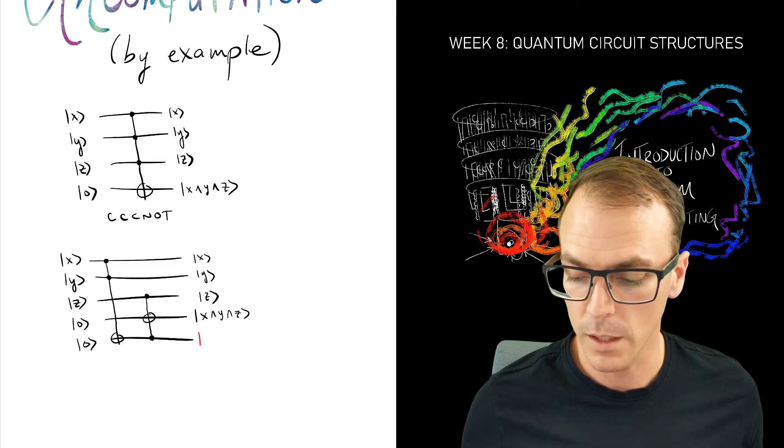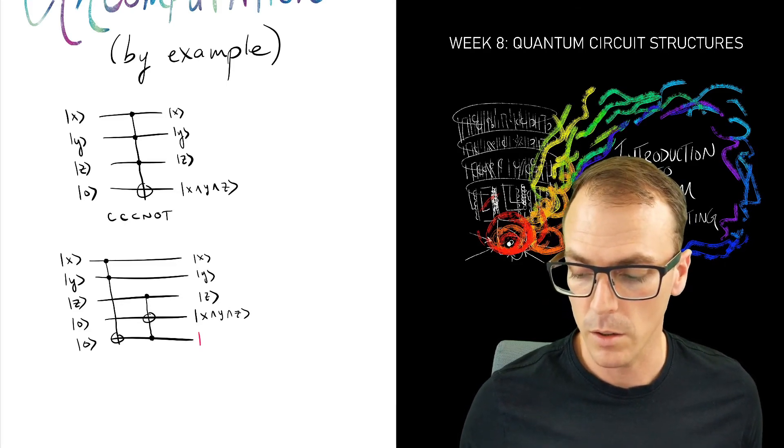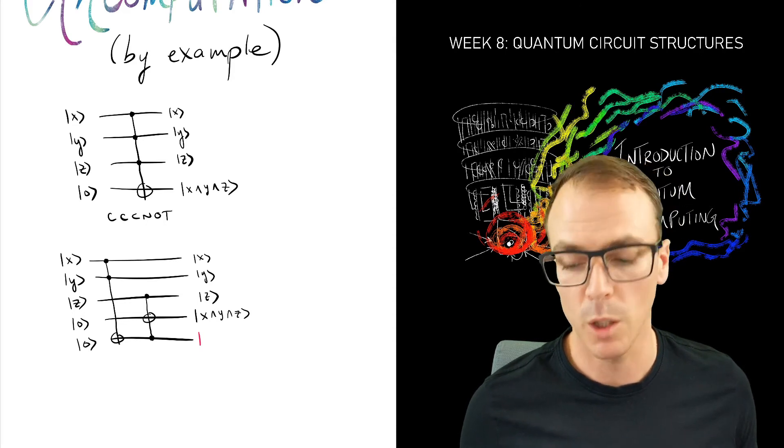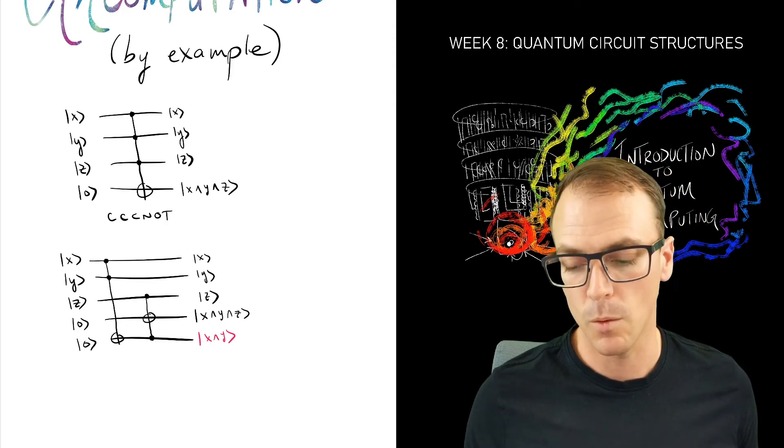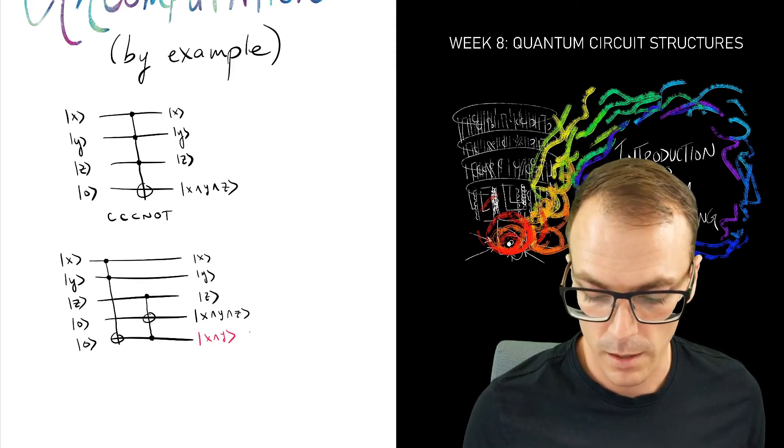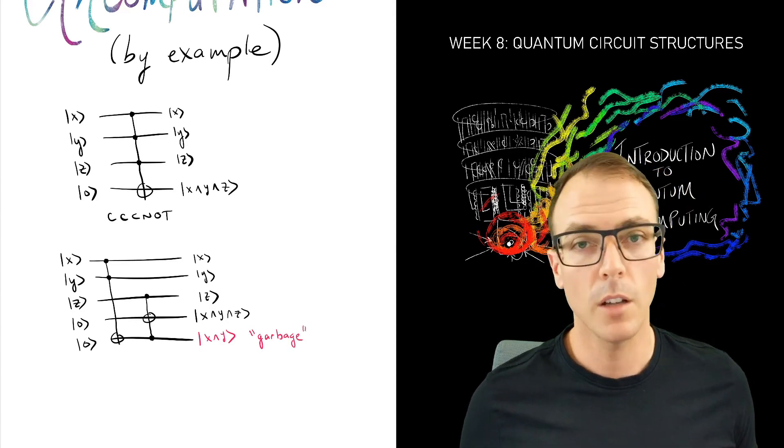However, we see something interesting. That bottom qubit is not left in the zero state. We've performed a CCNOT or Toffoli on the first, the second, and the bottom qubit. So that qubit is left in the state X AND Y. And this we don't want and is technically called garbage.